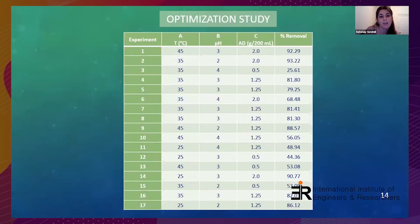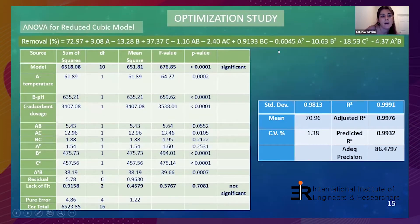As seen in the chart, there are 17 experiments performed. The best removal is 93.92% and the lowest is 25.61%. The chart shows that the model is statistically significant and lack of fit is not significant, confirming it is a correct model. The R-squared, adjusted R-squared, and predicted R-squared values are close to each other, indicating a correct predictive model.